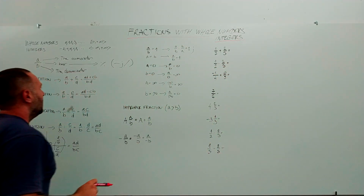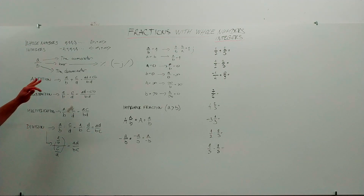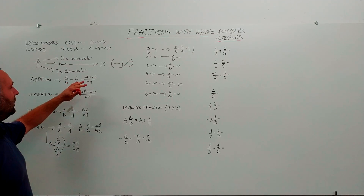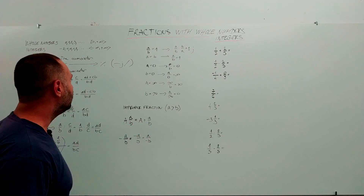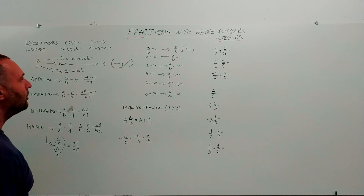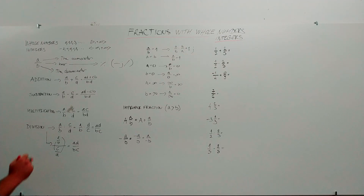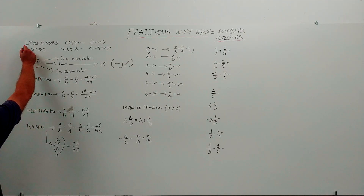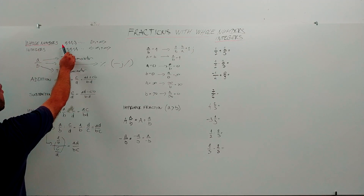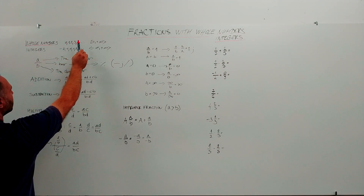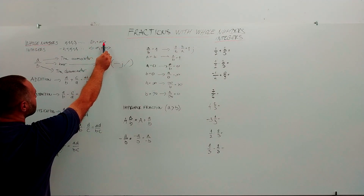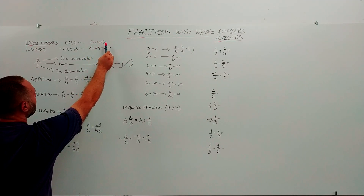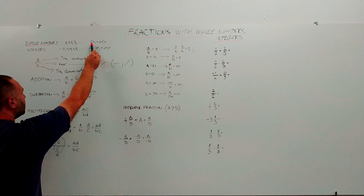All of this here is background knowledge, or theoretical background of fractions with whole numbers or with integers. First of all, what are the whole numbers? Whole numbers are 0, 1, 2, 3, 4, 10, 20, 100, and so on — basically from 0 to plus infinity. Zero is included.